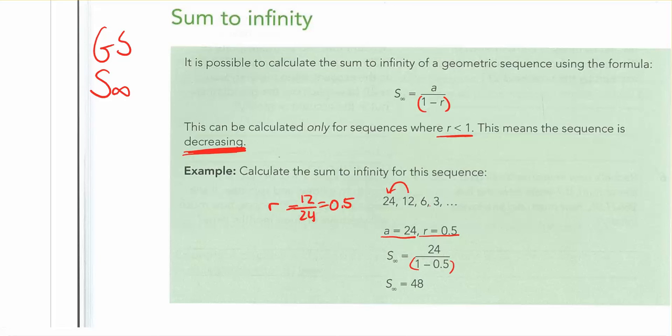Versus an increasing sequence, the amount you're adding on each time, that new number, is always getting bigger because each next term in the sequence is bigger than the previous one. So here, because we're decreasing, we're getting smaller, you're eventually going to be adding numbers that are so small they're not going to make any difference to the total at all.